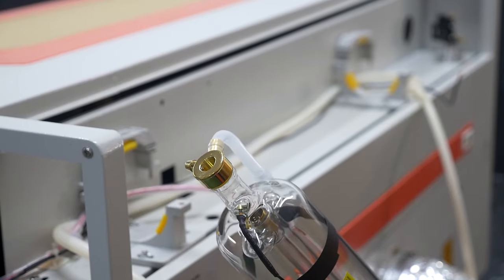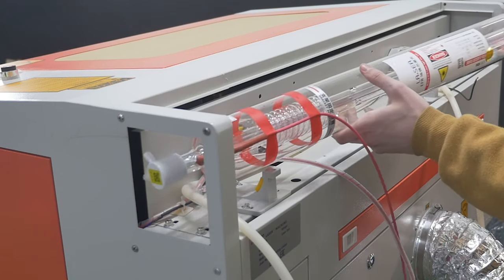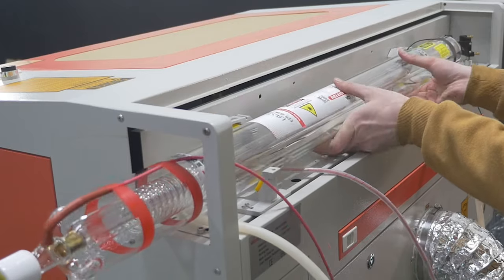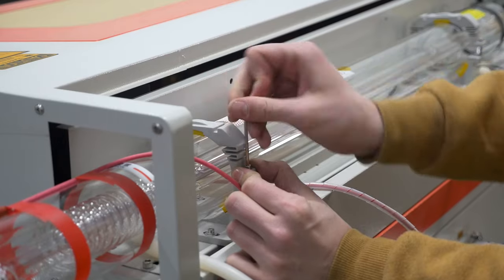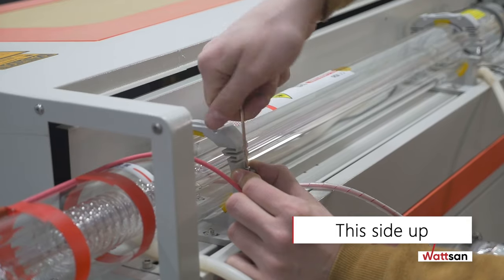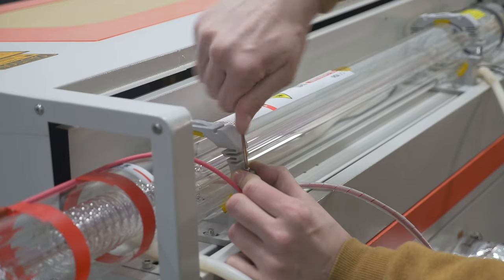Place the laser tube in the special clamping. Pay attention to the sticker on the laser tube, this side up. This side should be set up for the bubbles to come out.